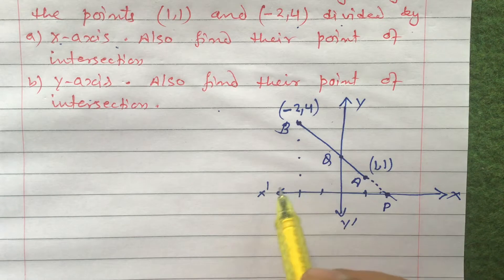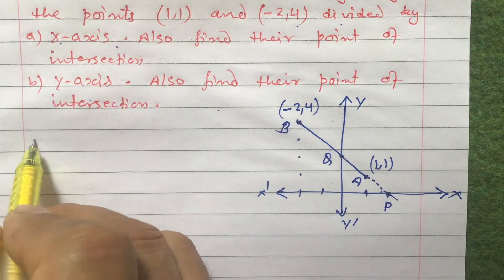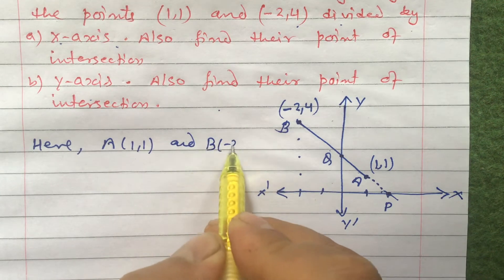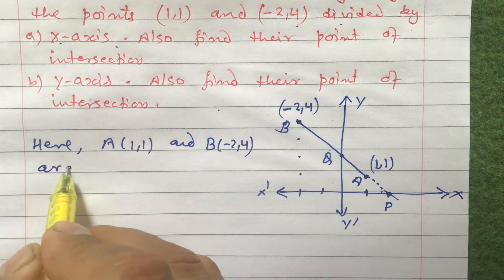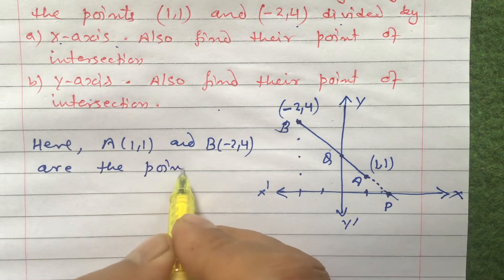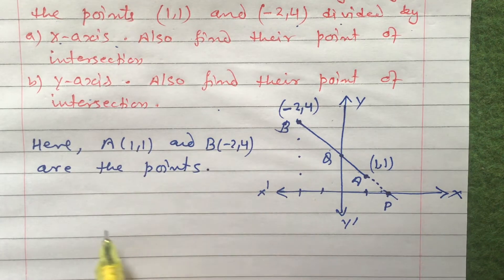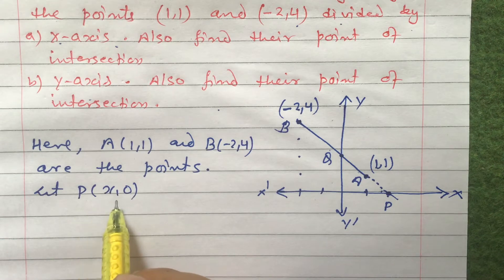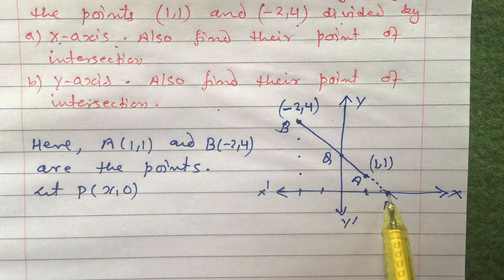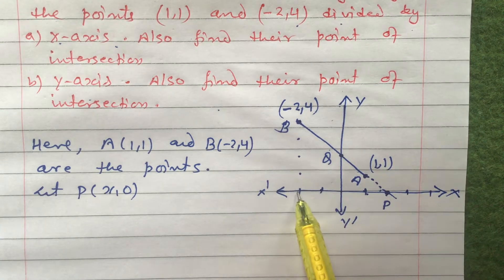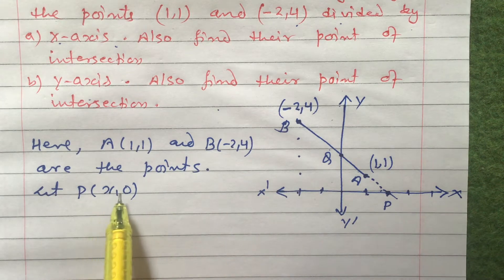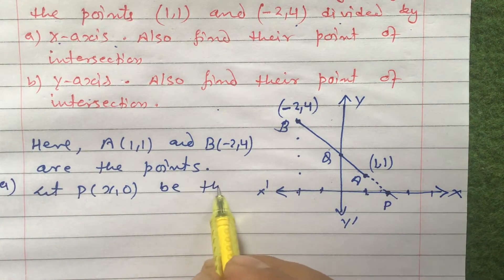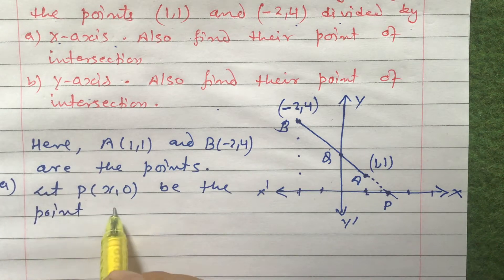Let us consider this as point A and this as point B. So A is (1,1) and B is (-2,4). Let P(x, 0) be the point on the x-axis — because on the x-axis the y-coordinate is always 0, so we write x comma 0. Let P(x, 0) be the point on the x-axis which divides AB in the ratio m1 : m2.